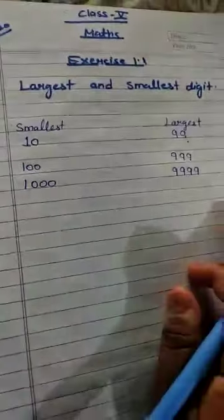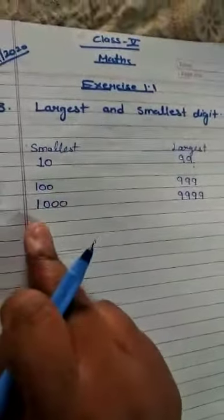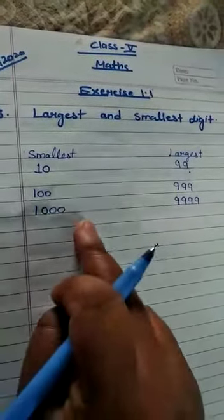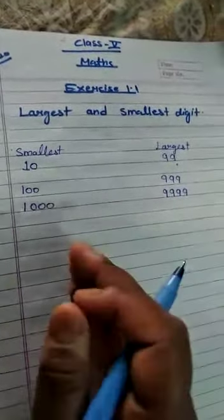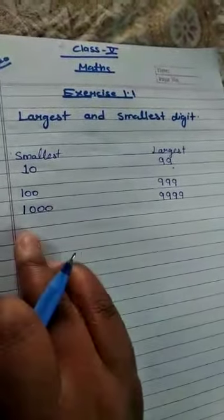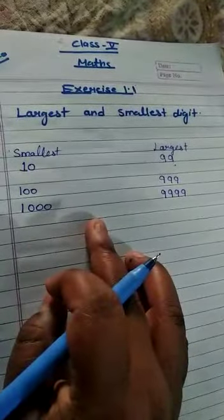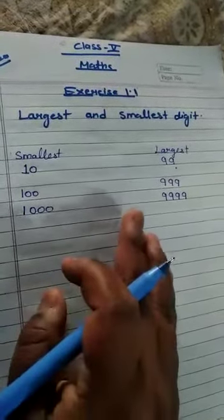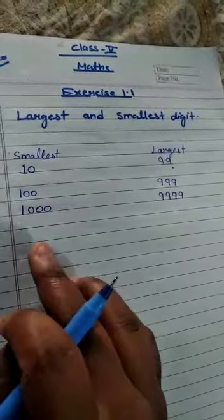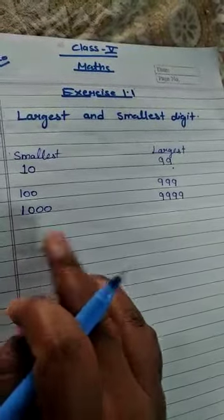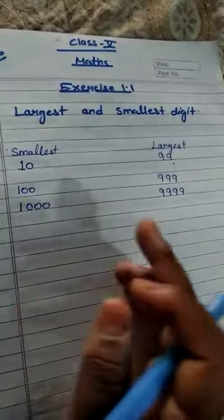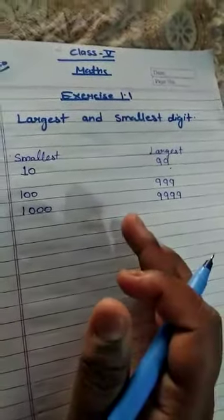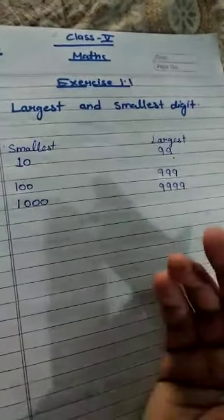For the smallest number, we will write 1 and then whatever digit count is required, we write one less zero. If we ask for 5 digits, then 1 and 4 zeros. For 2 digits: 10. For 3 digits: 100. For 4 digits: 1000. For 5 digits: 10,000.